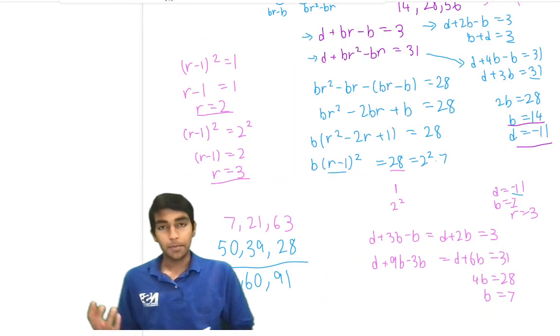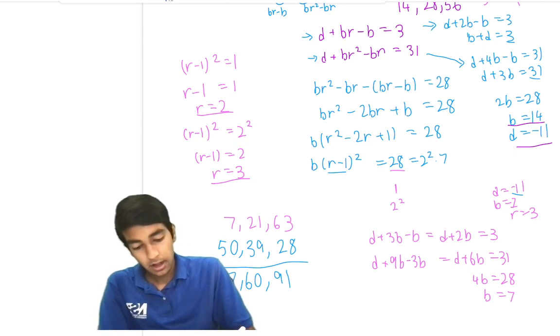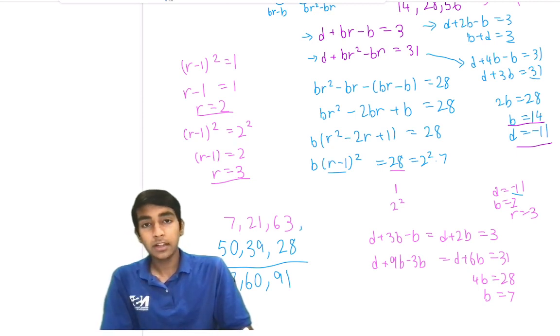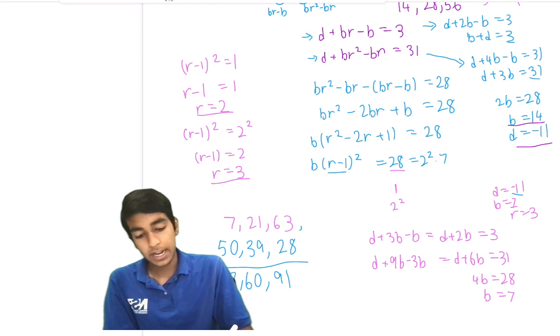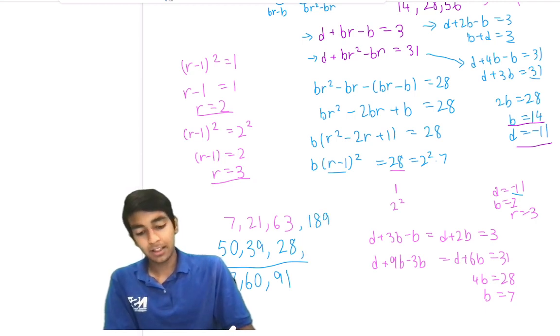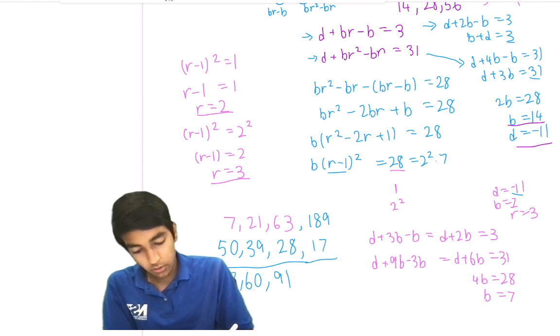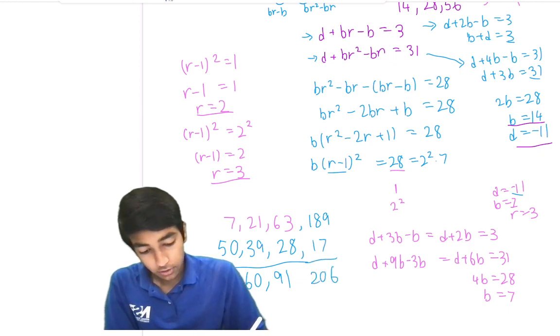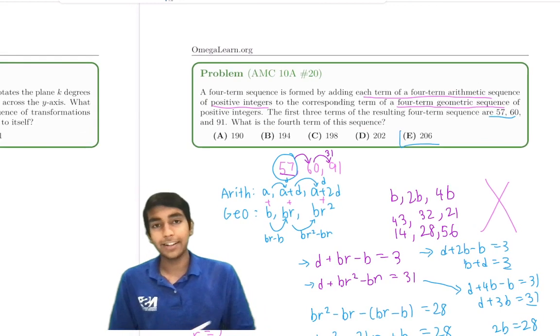Now let's find the fourth term, and we can do that pretty easily. The fourth term of the geometric sequence is 3 times 63, 189. The fourth term of the arithmetic sequence, 28 minus 11, 17. We sum this up, we get 206. 206 is our final answer.